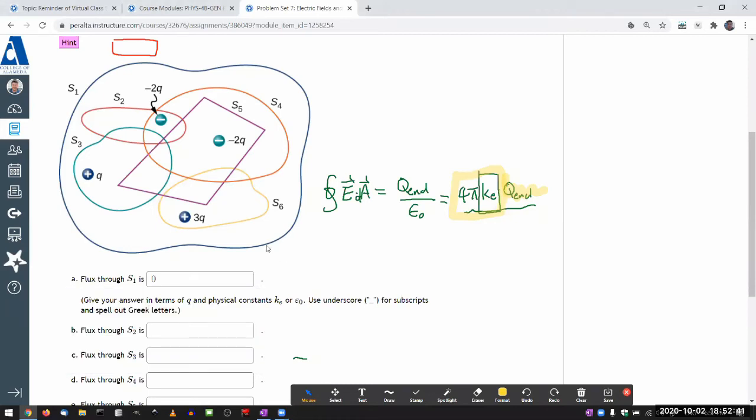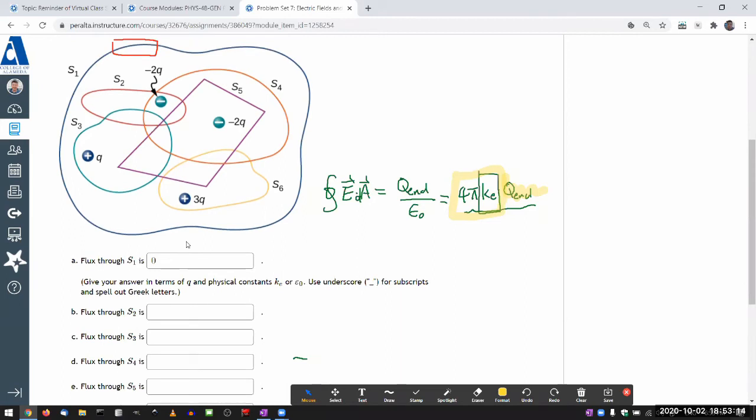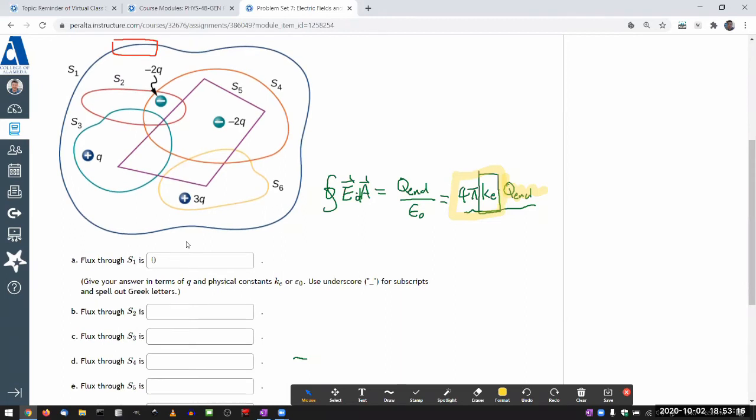Now, this doesn't mean the electric field on these surfaces is zero. You can clearly see from this distribution that the electric field closer to this portion will point into the surface, while closer to this portion it points out. There's a very interesting electric field distribution, but the net flux adds up to zero. The best way to gain intuition about that is to imagine drawing the electric field lines.